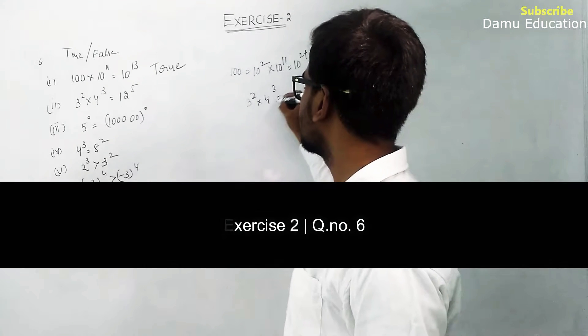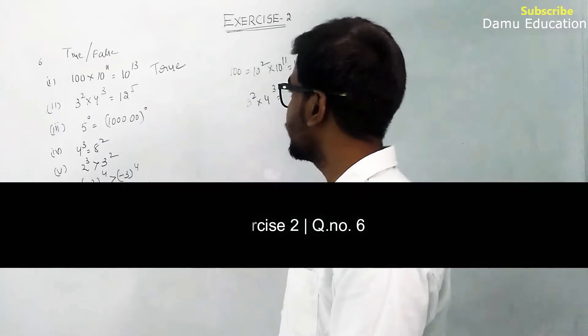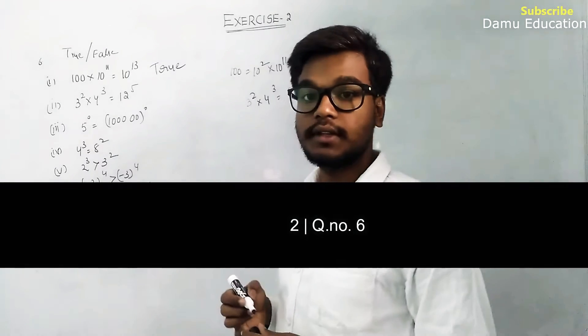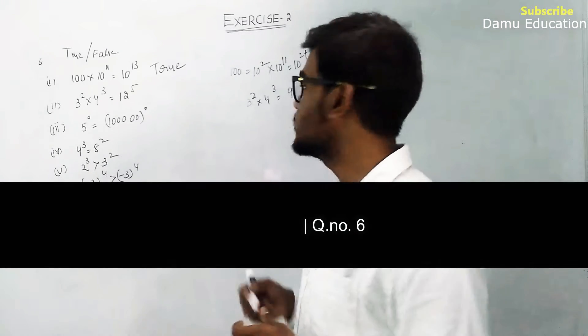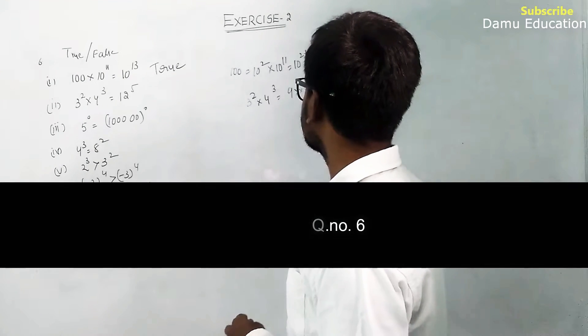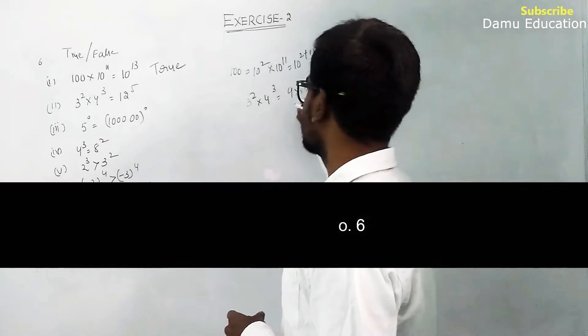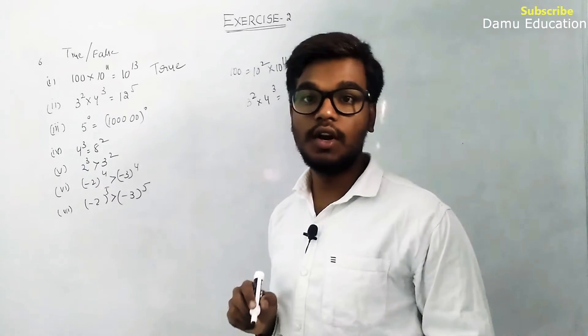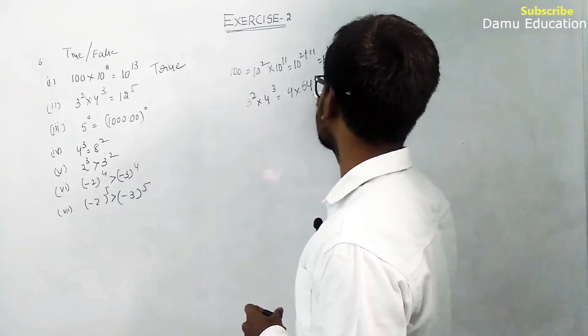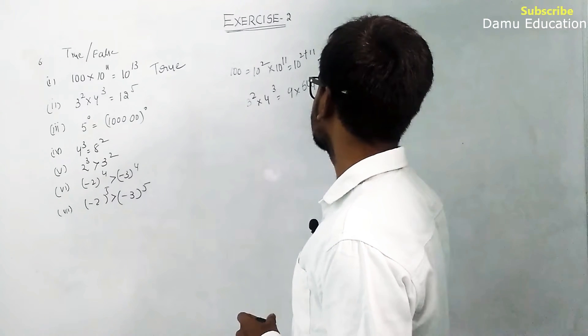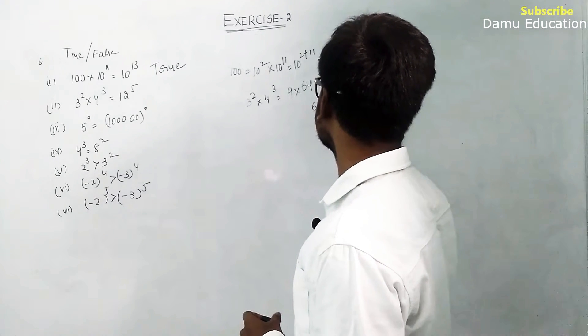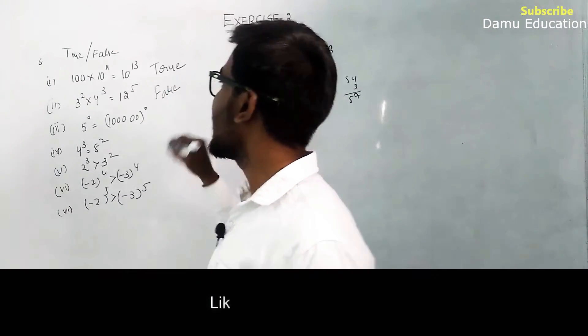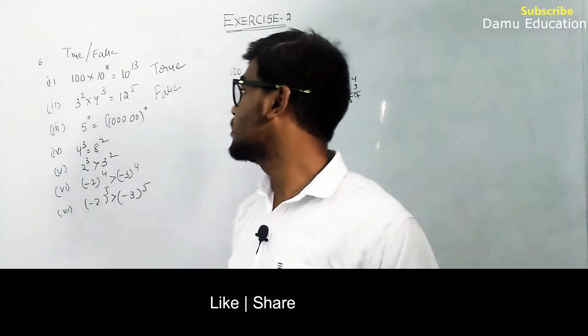Next: 3² × 4³. Here bases are different and powers are also different. 3² is 9, and 4³ is 4×4×4 = 64. So 9 × 64 = 576. This does not equal 12^5, which is much greater than 576. It is false. You should not add the bases and powers.